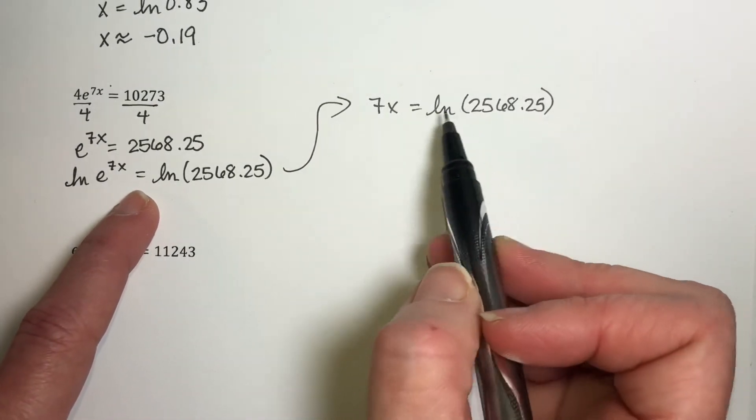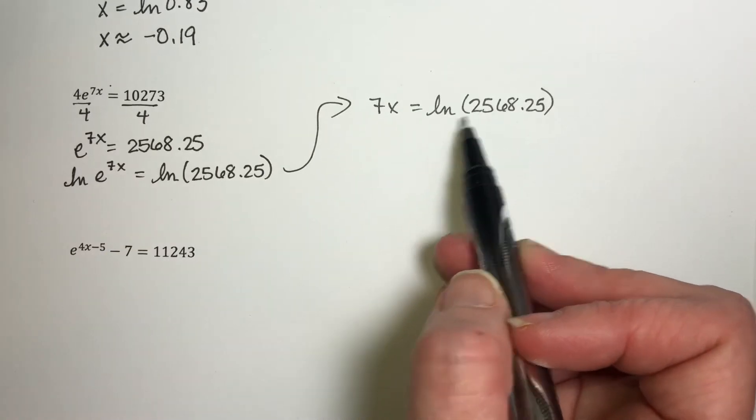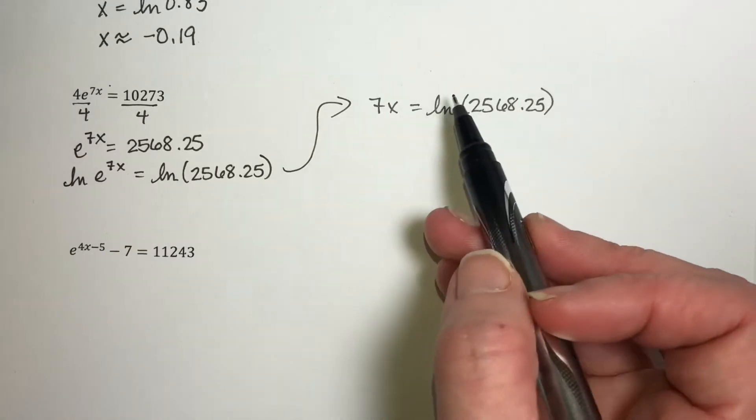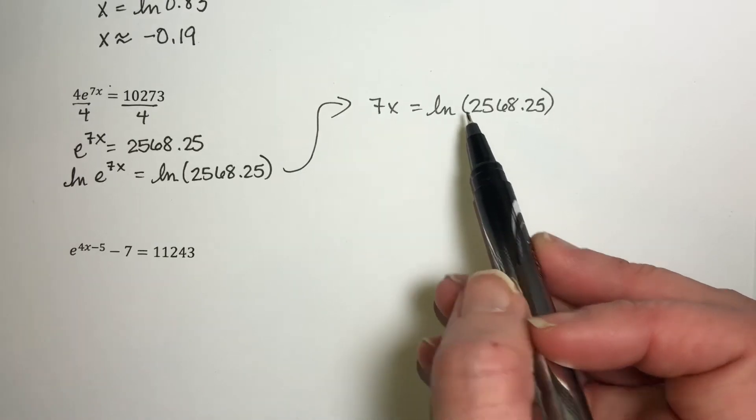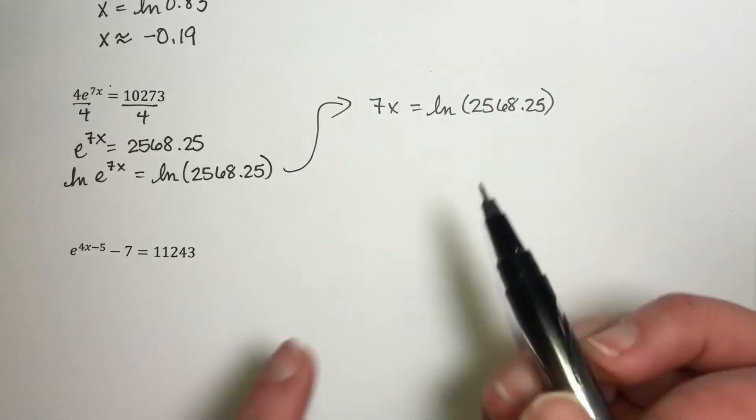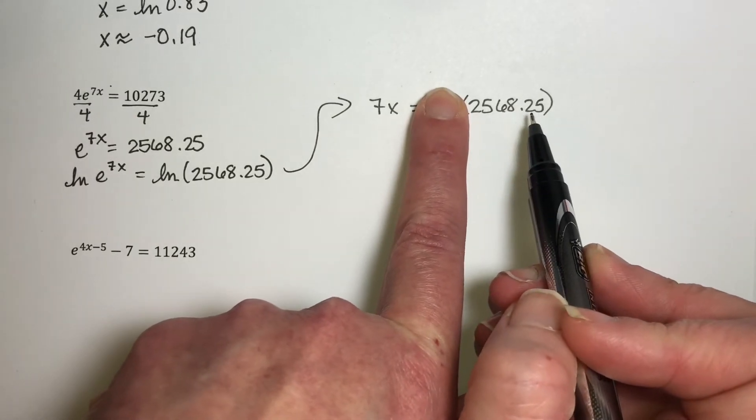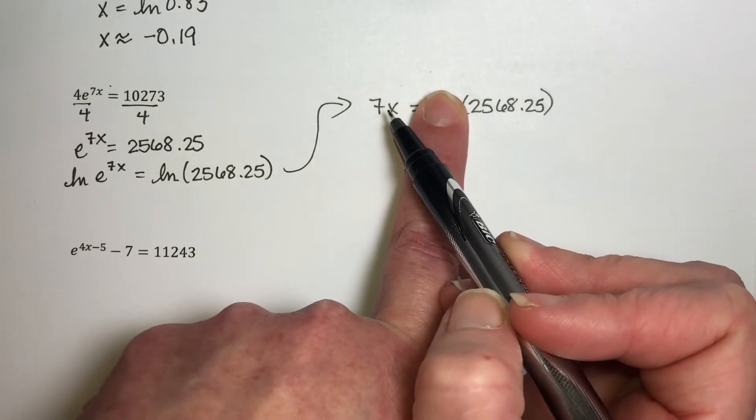Now this is just a number. It doesn't really look like it, but this is some exact number. So just think about it. If you ever get stuck asking yourself, well, what would I do now? Pretend for a second it's just this number. Ask yourself what you would do. You would divide both sides by 7. You wouldn't have an issue with that.